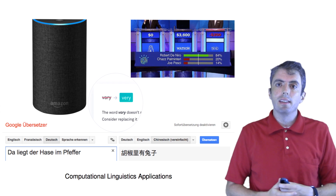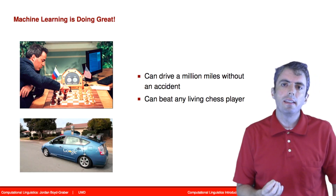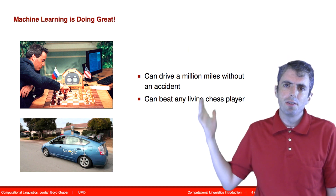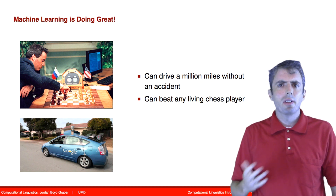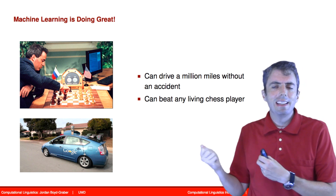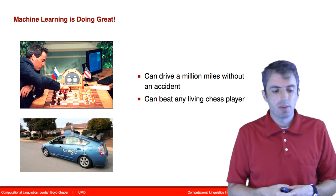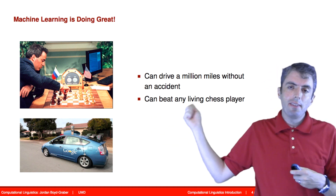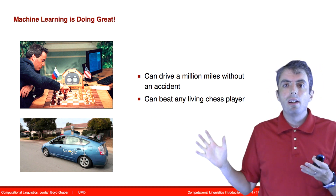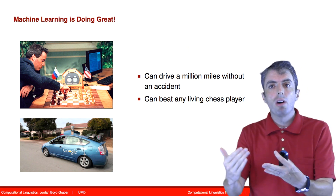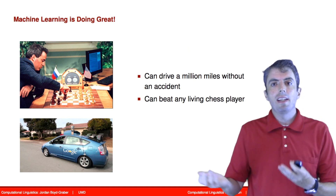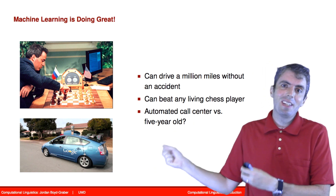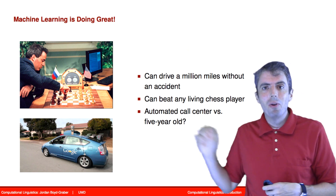We're going to be talking about many of these things in this class. But when you compare the advances that have been made in other applications of machine learning, such as self-driving cars or playing chess or Go, we significantly lag behind when it comes to applications in natural language processing. In applications like driving a car or playing chess or playing Go, we are at superhuman levels. But if you were to call up any call center and talk to one of the automated agents there, the effectiveness of those techniques lag far behind a precocious five-year-old.